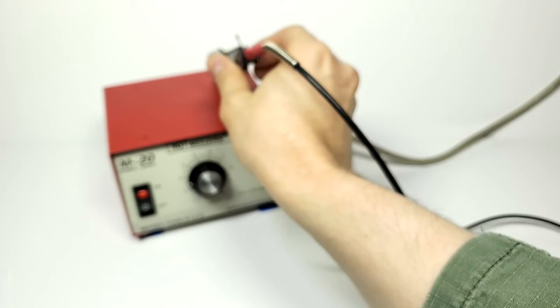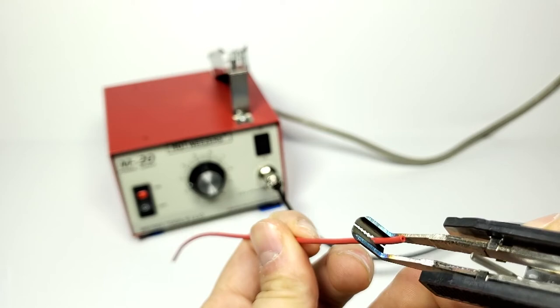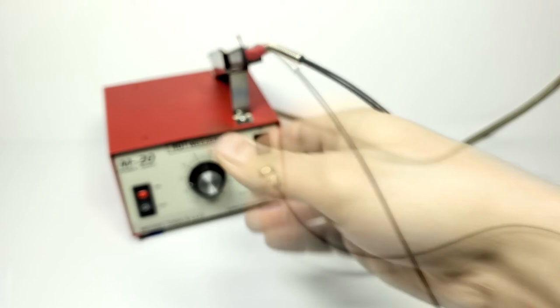Then all you do is use the tweezers on the wire to bisect the insulation. Once that's done, put the tweezers back in the holster and remove the insulation slug from the end of the wire.